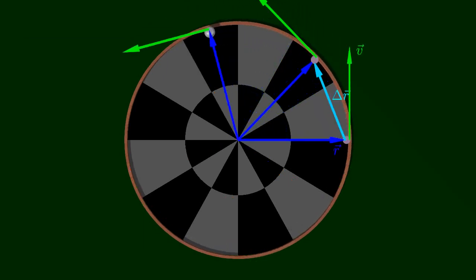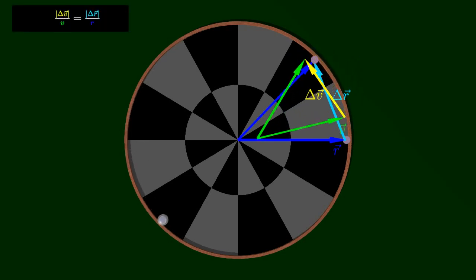The magnitude of the acceleration can be determined by noting that over short time intervals, the change in the position vector and the change in the velocity vector form similar isosceles triangles.